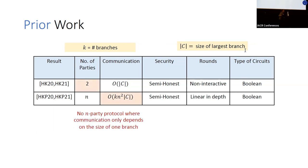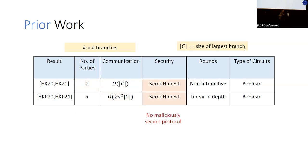These works overall leave several interesting open questions. The first: can we design an n-party protocol for conditional branches where total communication is independent of all branches? Second, all prior works only consider security against a semi-honest adversary — can we achieve similar efficiency in the malicious setting? And finally, these protocols only focus on the Boolean circuit case — what about protocols for arithmetic circuits?